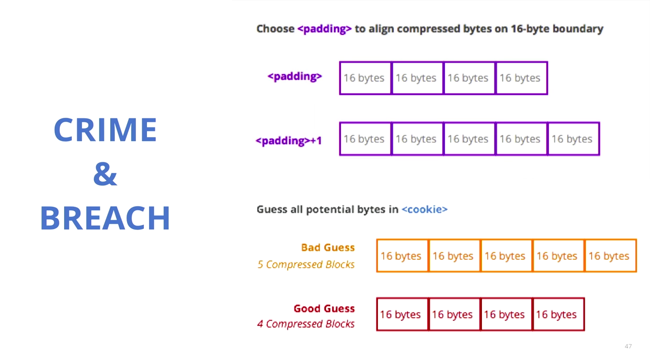CRIME is about TLS compression — everyone disabled TLS compression after CRIME happened. BREACH came out the next year at Black Hat and relies on HTTP compression, which for performance reasons nobody has turned off. So CRIME is not really a problem now, but BREACH is actually very exploitable in many, many websites.